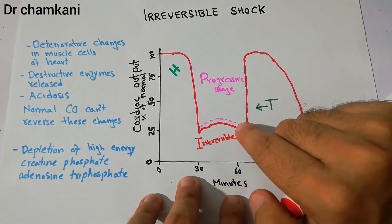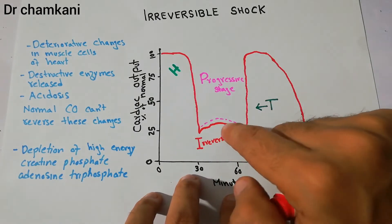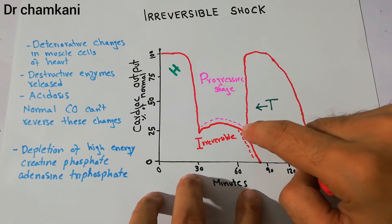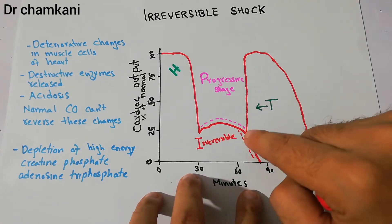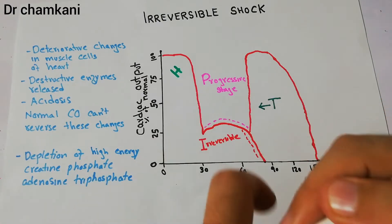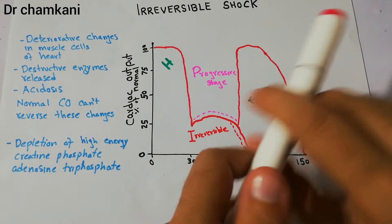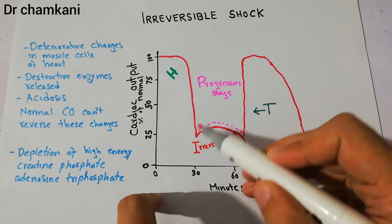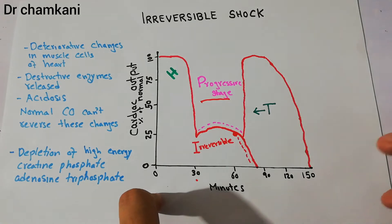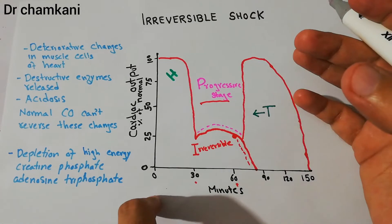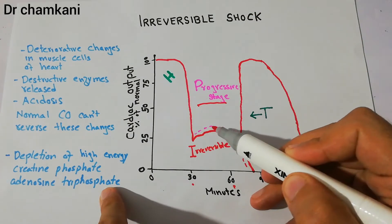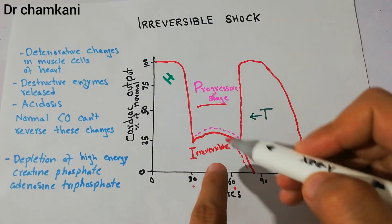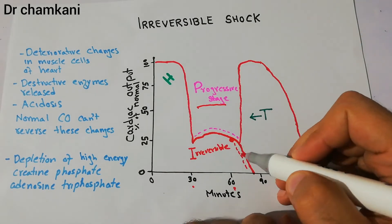From 30 minutes to 60 minutes, as long as the patient is in the progressive stage, any treatment provided can recover the shock. But once this point has been crossed, the patient enters the irreversible stage. There may be a slight temporary increase in cardiac output due to compensatory processes, but the fall in cardiac output is so large that the body is unable to recover and the patient enters the irreversible stage.